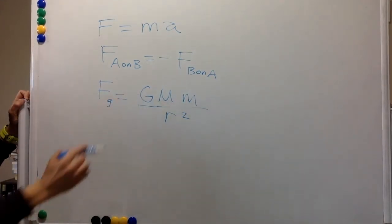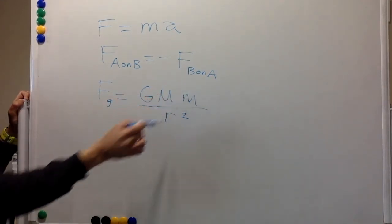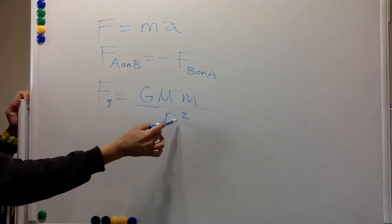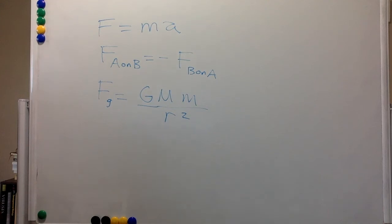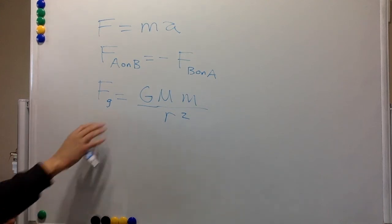So G is the gravitational constant, the masses of the two objects, and this is the distance that separates the centers of mass of the two objects. So that's gravity.